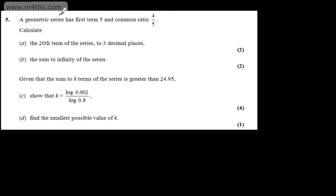This is question 5. We're told a geometric series has first term 5 and common ratio 4 fifths. We're asked to calculate, in part a, the 20th term of the series to 3 decimal places.